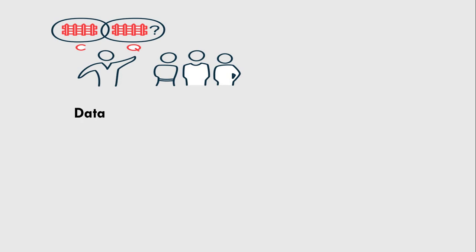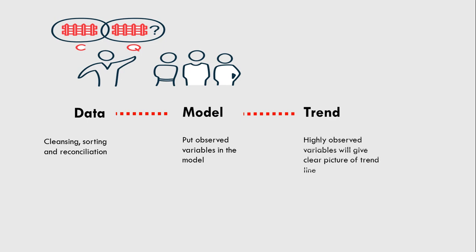To quantify storytelling, we have to gather historic data to build a model for the future trend. For good quality data, we have to do cleansing, sorting, and reconciliation. Later, put observed variables in the model to find out relationships in between. And lastly, high observed variables will give clear picture of the required trend line.